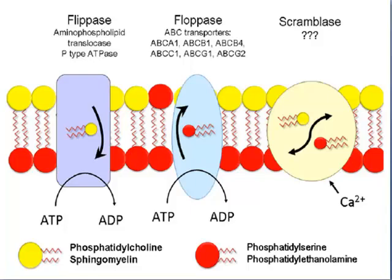The third one is scramblases. I have told you that it maintains both directions — it will translocate phospholipid molecules in both directions, in equilibrium. The condition is equilibrium: if one phospholipid molecule is translocating upward, then simultaneously another one is translocating to the cytosolic leaflet. This is the function of scramblases, maintaining transport in both directions.